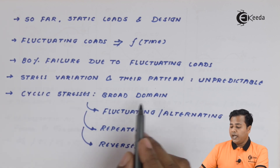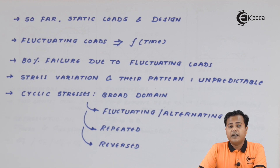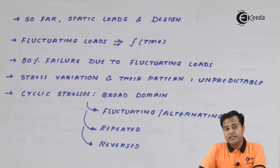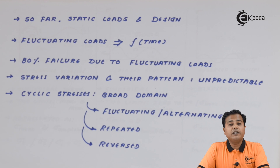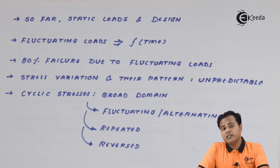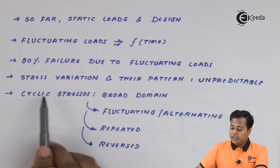The stress variation and pattern in fluctuating loads are unpredictable. With static loading we can predict the load, stress, and nature of stress — whether tensile or compressive, increasing or decreasing. But with fluctuating loads, since the fluctuation is not constant, it may vary with other factors such as surface or coordinates, and we cannot predict these stresses or their variation. That is why we need to address this 80 percent domain.